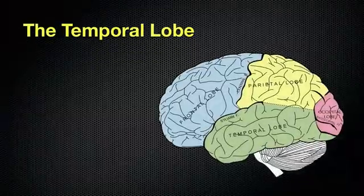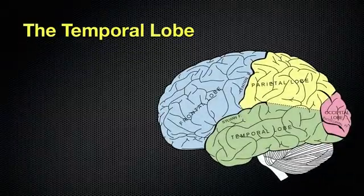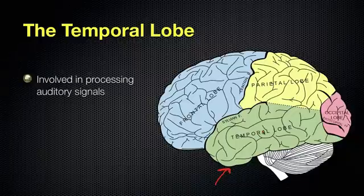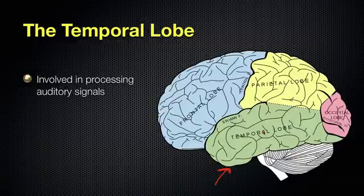Let's move on to the temporal lobe. You can see it over here, to the side of the brain, shown in green. The temporal lobe is involved in processing auditory signals. We've spoken about how hearing happens — you can look at episodes 36 through 40 where I cover hearing.